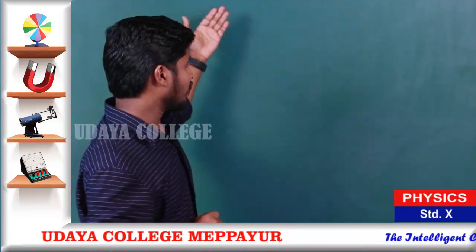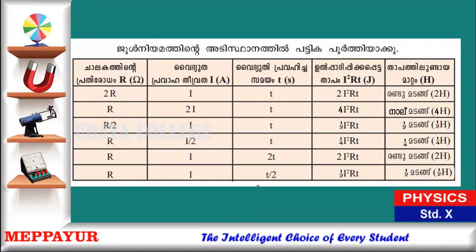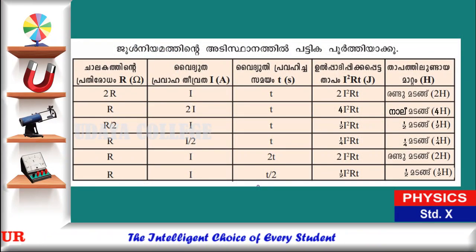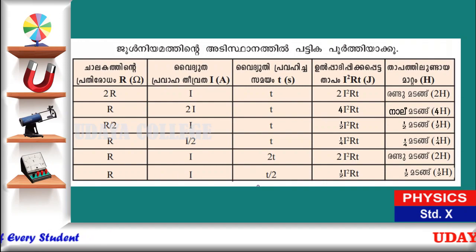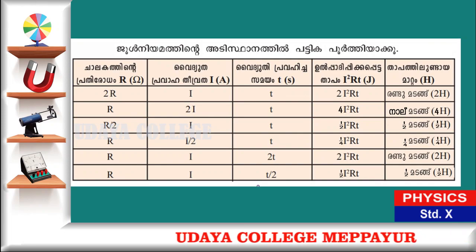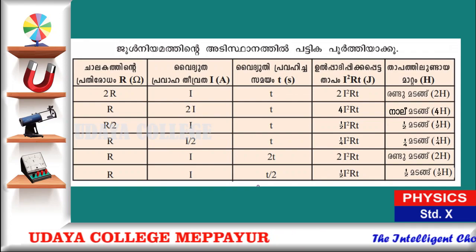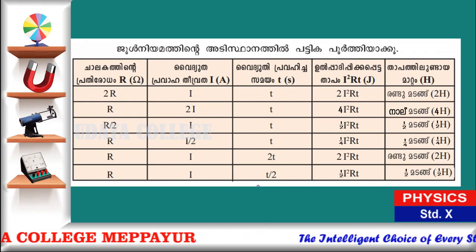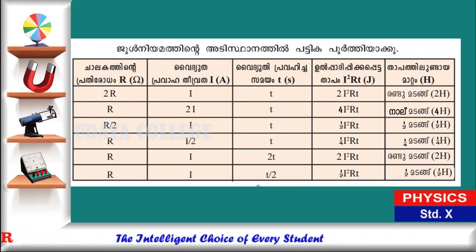I am going to show you how this is called Joule's law. The name of Joule involves I and T. That means the name of Joule's law gives H equals I squared R, so H equals I squared R T.